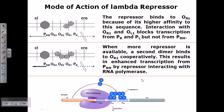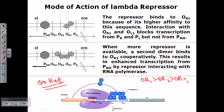The repressor, or Cro repressor, binds to OR1 with the highest affinity, then slightly lesser affinity to OR2, and even less affinity to OR3. At the very beginning, when the repressor is present in very low concentration, it first binds to OR1 because that region has the highest affinity.